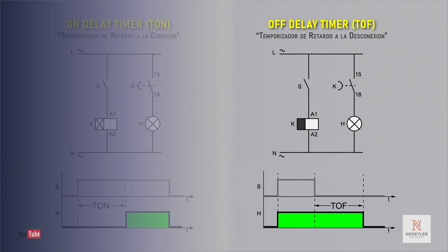Disconnection delay timer, known by its abbreviation TOF, allows the circuit to be disconnected by switching its contacts to their default state after a certain time after the deactivation signal is generated.